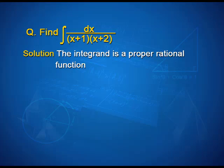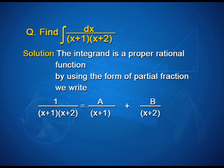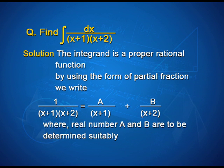Find integral dx upon (x+1)(x+2). For the solution, we can see the integrand is a proper rational function. Therefore, by using the form of partial fraction, we write 1 upon (x+1)(x+2) as A upon (x+1) plus B upon (x+2), where real numbers A and B are to be determined suitably.